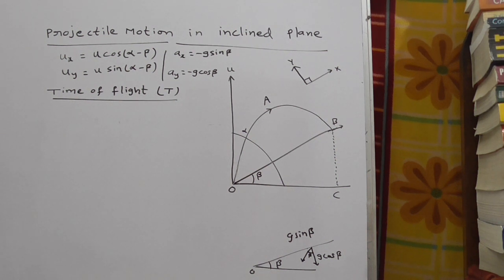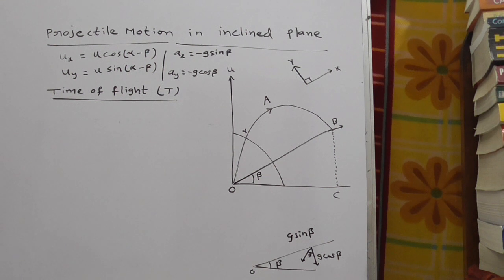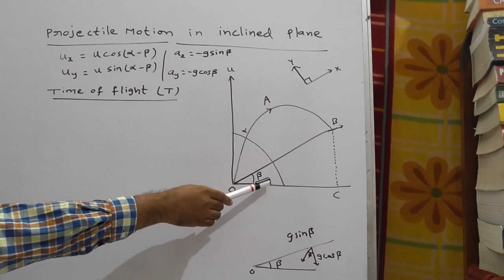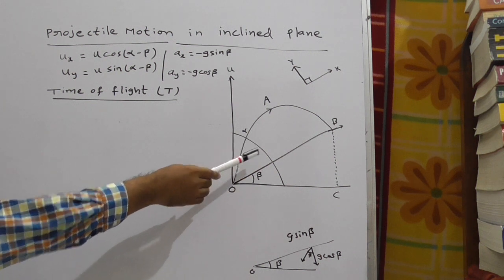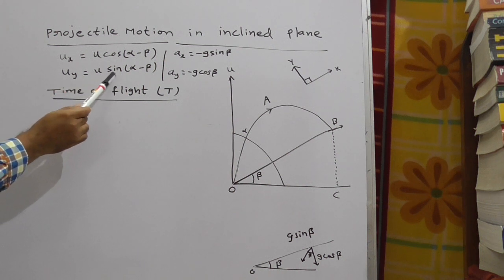Now ux, initial velocity with respect to x-axis. Here you can take u cos(alpha minus beta). Now this is alpha angle, this is beta, the remaining part automatically alpha minus beta. Therefore, ux equal to u cos(alpha minus beta). Uy is equal to u sin(alpha minus beta).